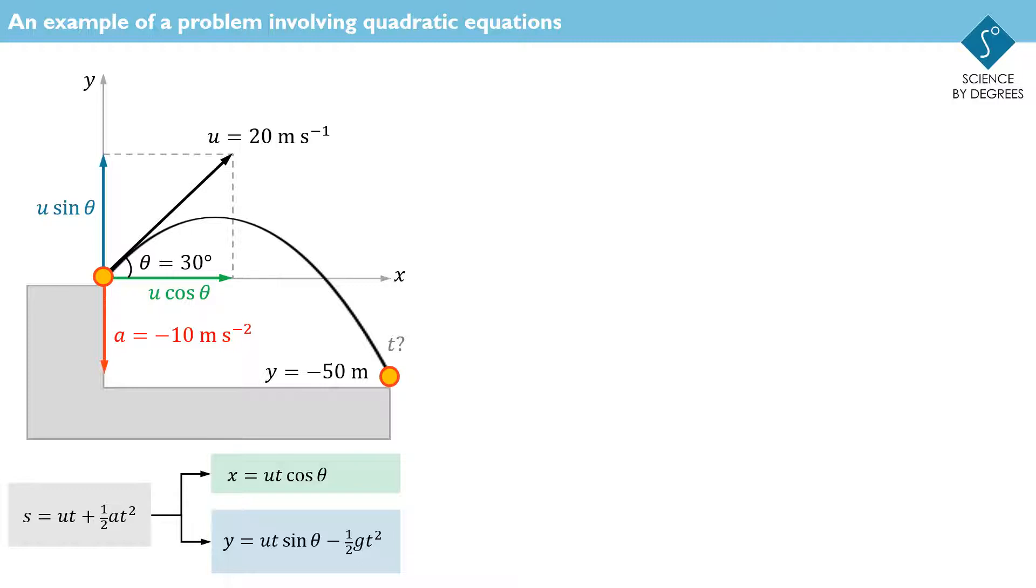If we use the vertical version and substitute in values y equals minus 50 meters, u equals 20 meters per second, theta equals 30 degrees, and g equals minus 10 meters per second squared, rather than 9.81 just because we want to keep the numbers easy, we end up with this, which simplifies to this.